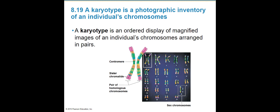We talked before about karyotypes. A karyotype is a picture inventory or snapshot of an individual's chromosomes. We can take a cell from a person, isolate their chromosomes, and see if there are too many or not enough. One chromosome comes from mom, one comes from dad, and they are lined up in their homologous pairs. Each little arm on a chromosome is a sister chromatid connected at the centromere. Chromosomes 1 through 22 are autosomes, or body chromosomes, and pair number 23 are our sex chromosomes.